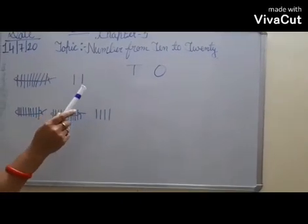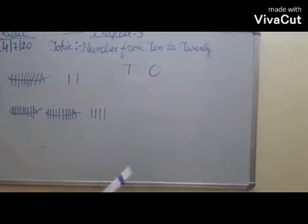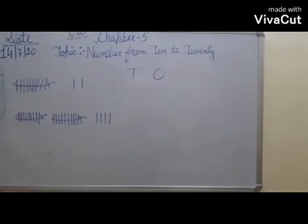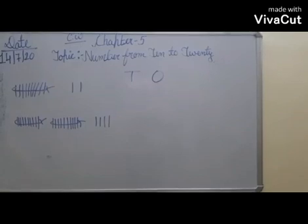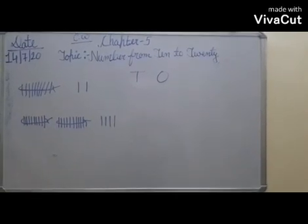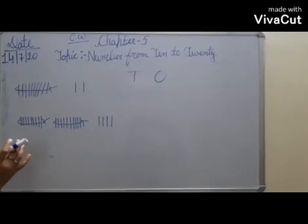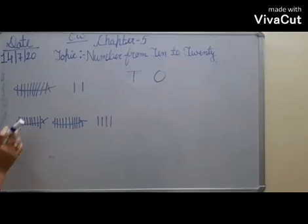Today topic is number from 10 to 20, chapter 5. We already understand the concept of tens and ones. Today we write number name by grouping of tens.